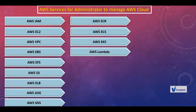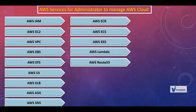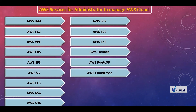Next is Lambda service, which comes under serverless architecture — for doing certain actions in AWS without managing servers. Then Route 53, which comes under DNS. Then CloudFront for content delivery network, and Certificate Manager.